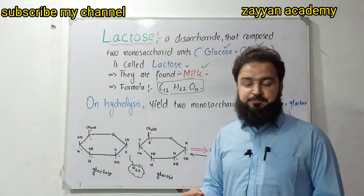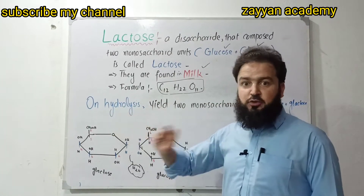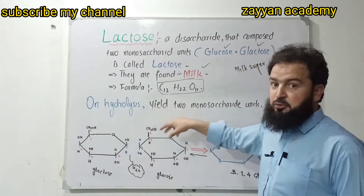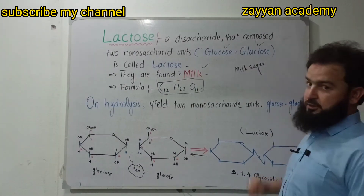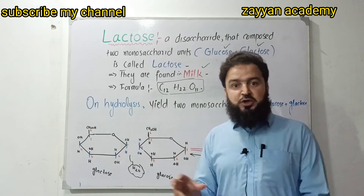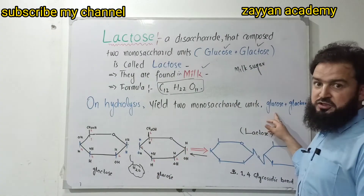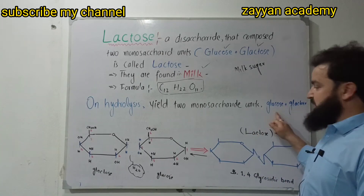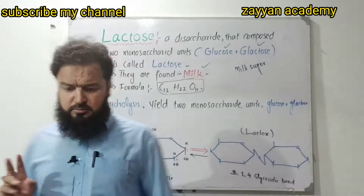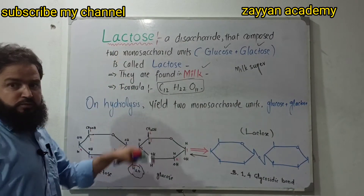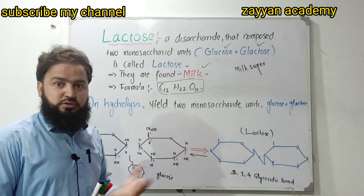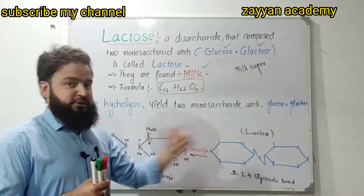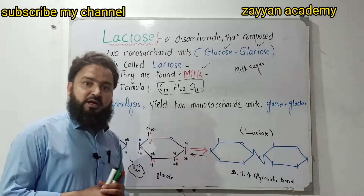Hydrolysis. Hydrolysis breaks down the large lactose molecule in water, which will break it down into its monosaccharide units — glucose plus galactose. Deep glycoside hydrolysis converts lactose into two monosaccharide units: galactose plus glucose.